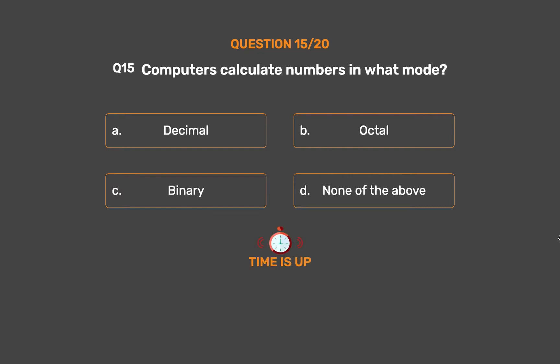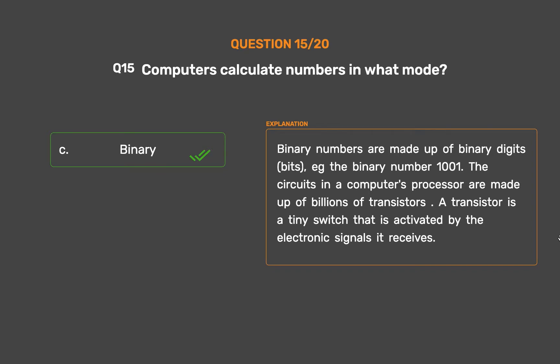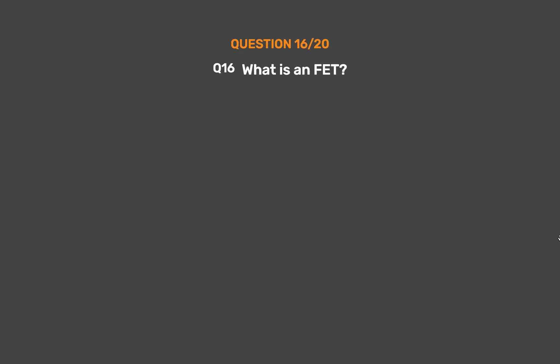The correct answer is Option C: Binary. Binary numbers are made up of binary digits (bits) — e.g., the binary number 1001. The circuits in a computer's processor are made up of billions of transistors. A transistor is a tiny switch that is activated by the electronic signals it receives.